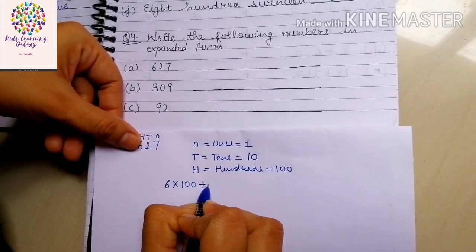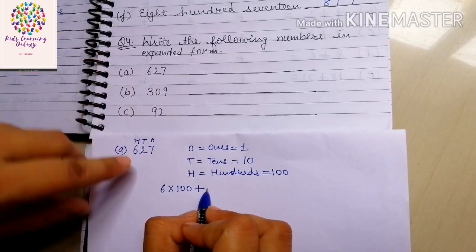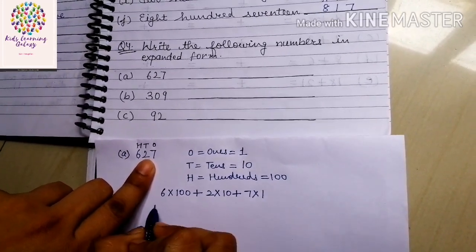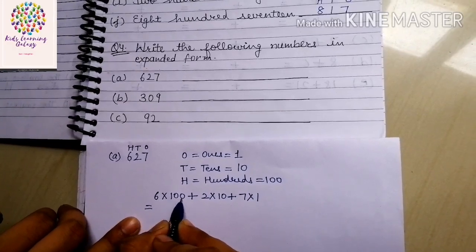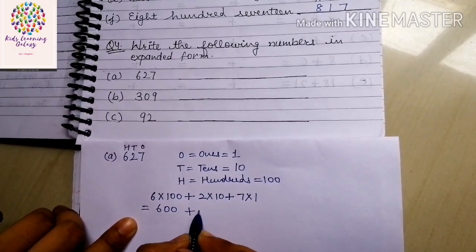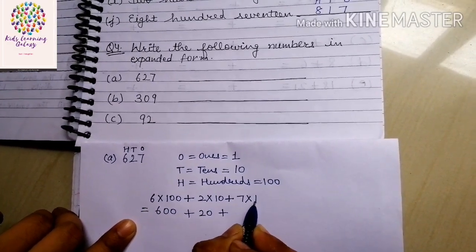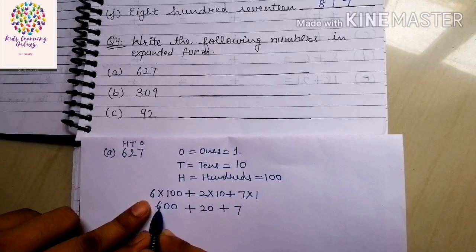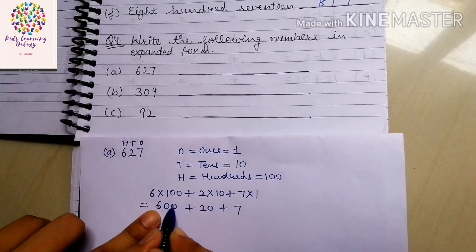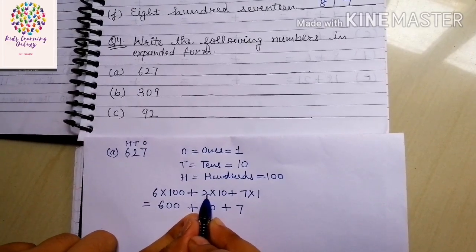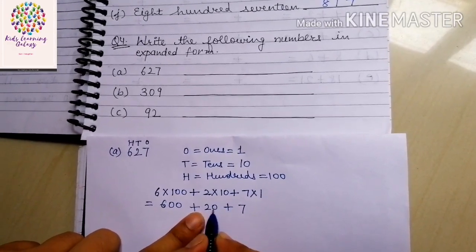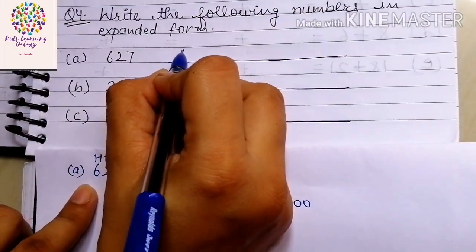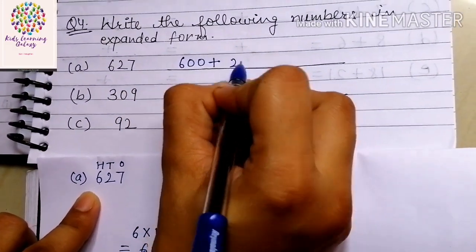Write a plus sign, then multiply 2 with 10, then another plus sign, and multiply 7 by 1. Our answer: 6 multiplied by 100 is 600 — 6 ones are 6, put two zeros. Plus 2 multiplied by 10 is 20 — 2 tens are 20. Plus 7 ones are 7. So our expanded form is 600 plus 20 plus 7.